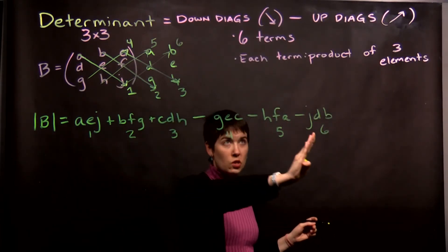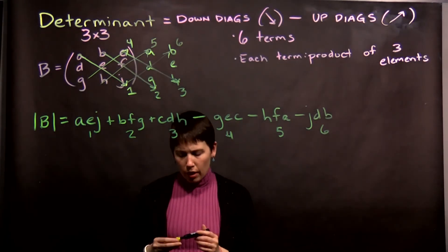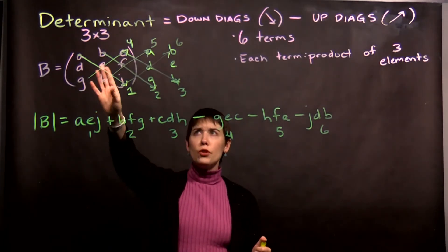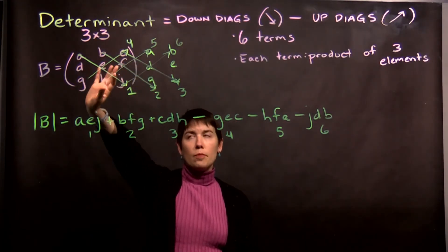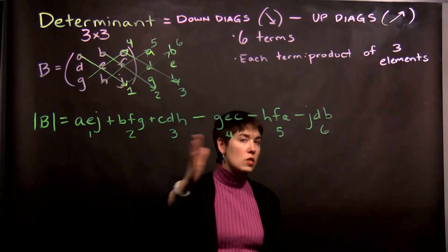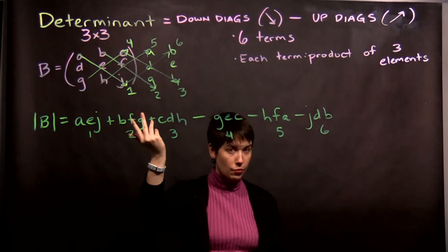Again, six terms, and each one has three elements. Where you have to be careful when you're doing this with actual numbers, there might be some zeros in your matrix, which is going to mean that some of these terms overall will be zero, because numbers multiplied by zero give you zero.